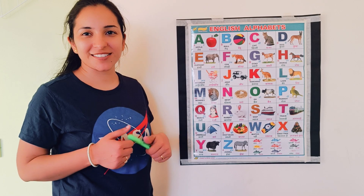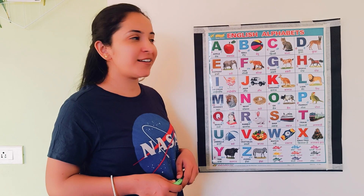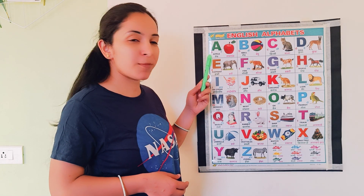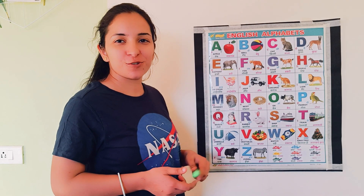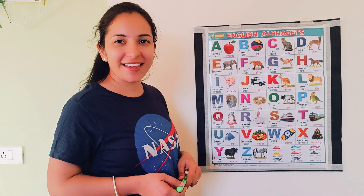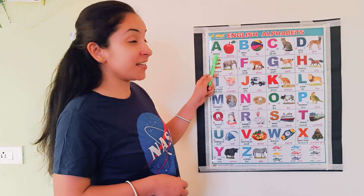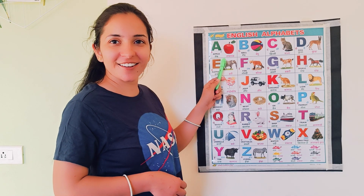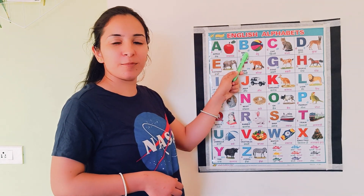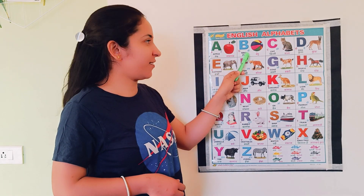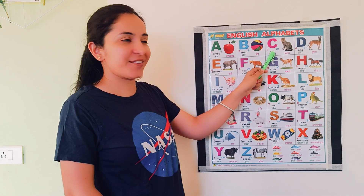Please support us. Today we will learn different colors with alphabet A to Z. So are you ready? Let's start. A, green color. B, blue color. C, pink color.